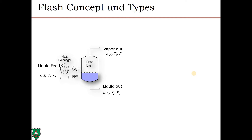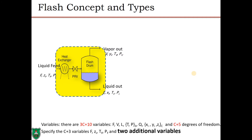In the liquid feed stream, the flow rate is F, with mole fractions Z, and conditions Tf and Pf. The vapor stream has flow rate V, mole fractions Y, and conditions Tv and Pv. The liquid stream has molar flow rate L, mole fractions Xi, and conditions TL and PL. For degrees of freedom analysis on this overall process, we end up with 3C plus 10 variables.